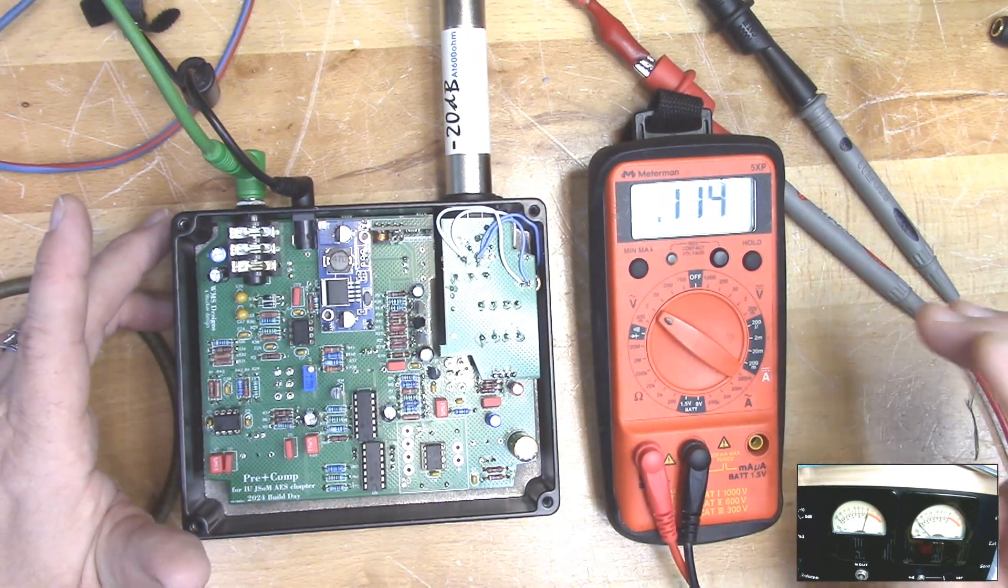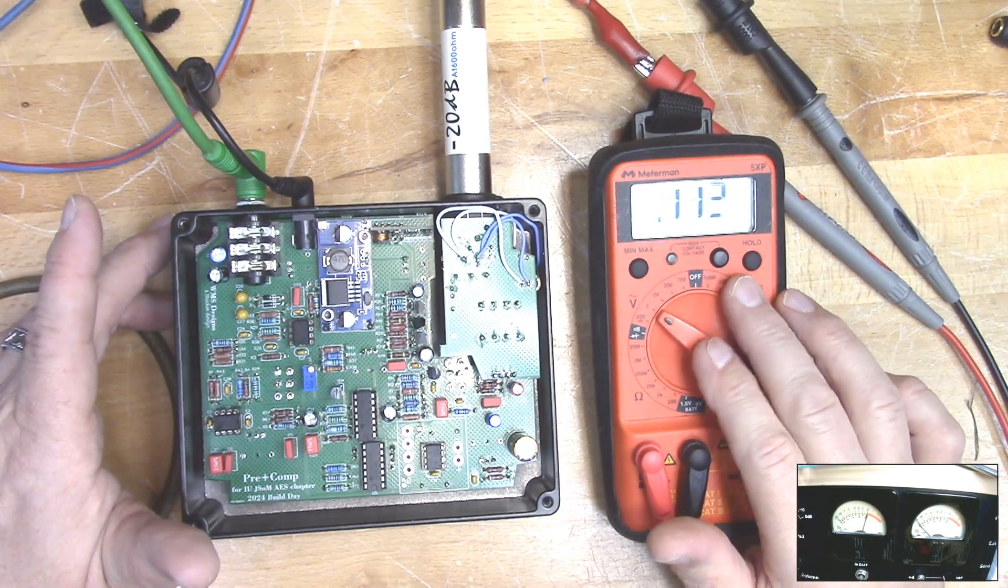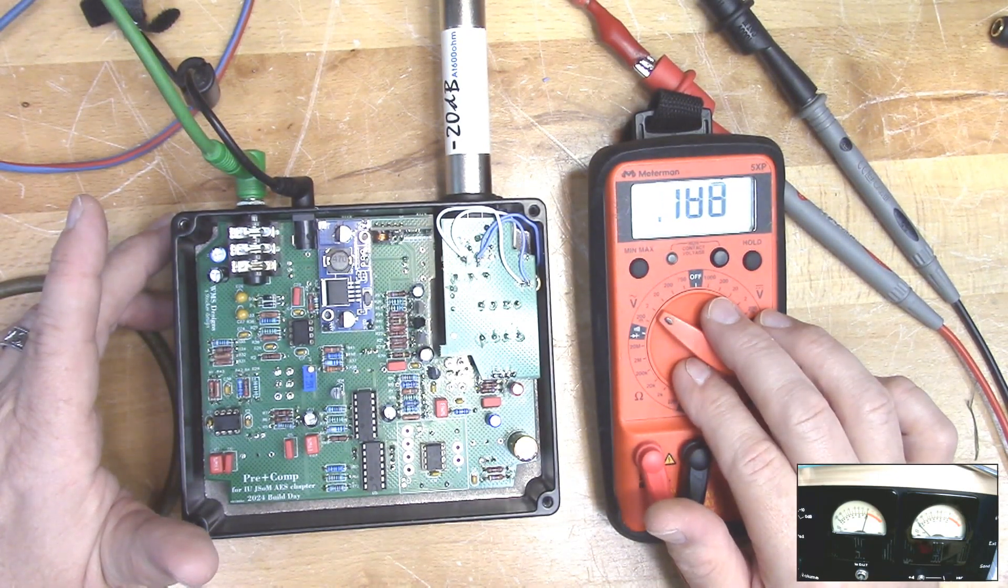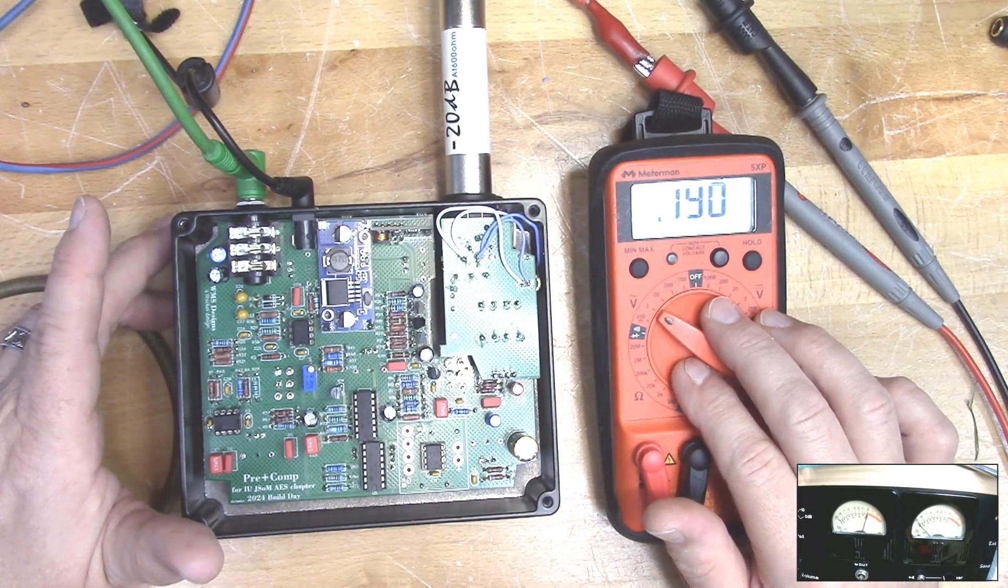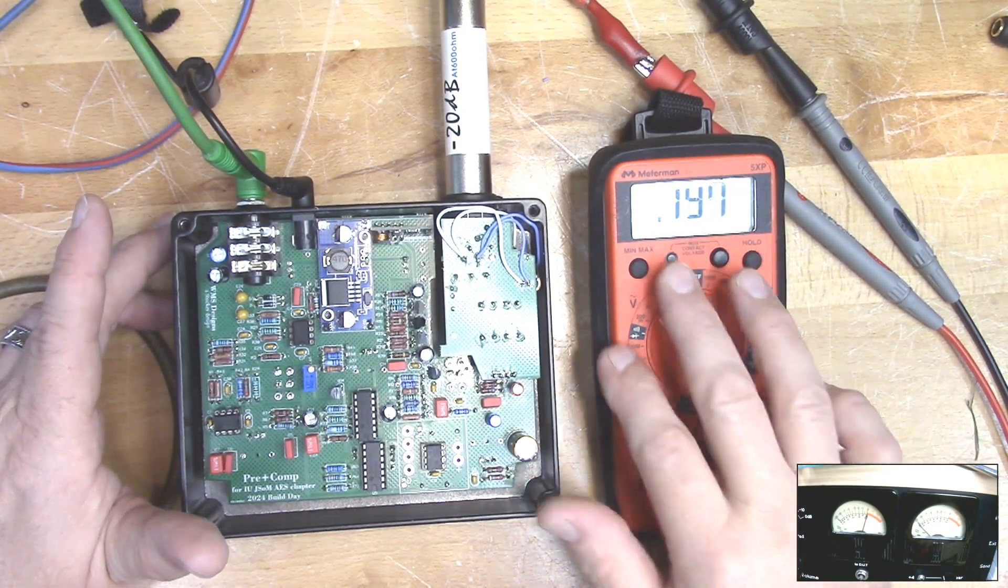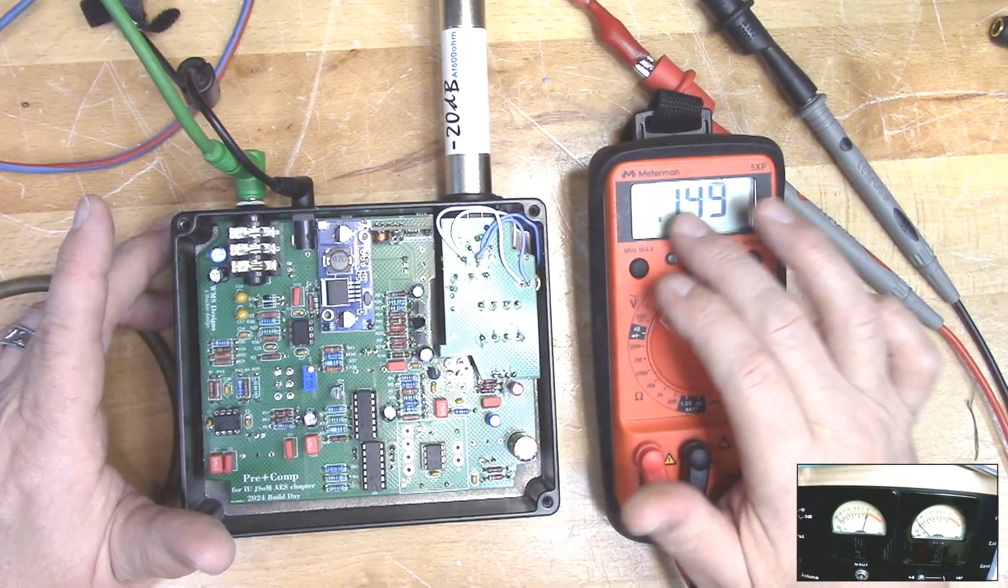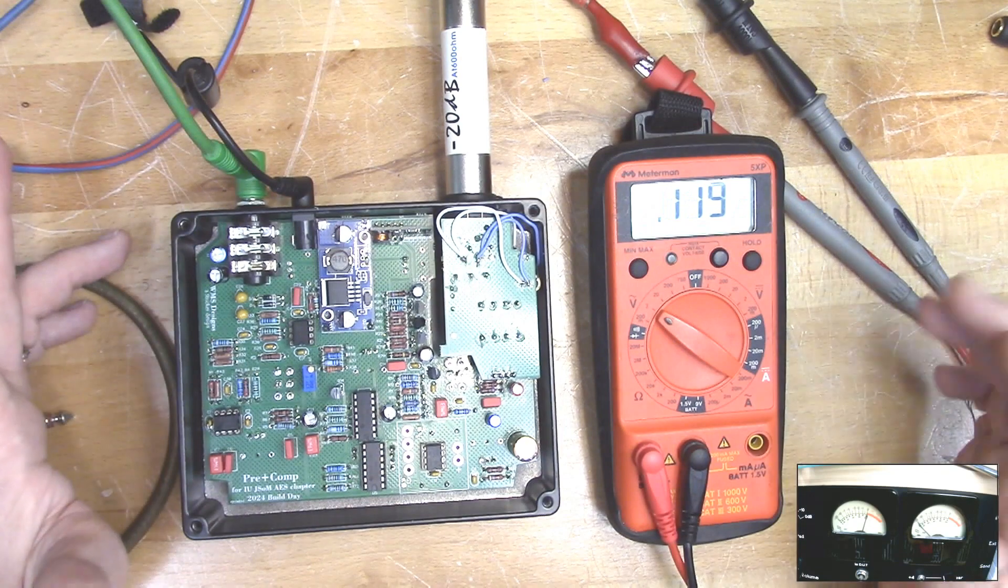To make sure it is a plus four signal, you can use a voltmeter and then adjust your signal source with the voltmeter between hot and cold. So you're getting 1.23 volts RMS, which is plus four dBU.